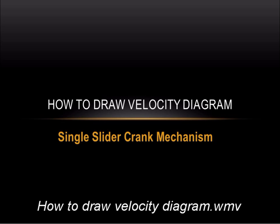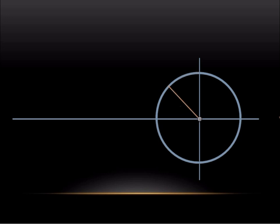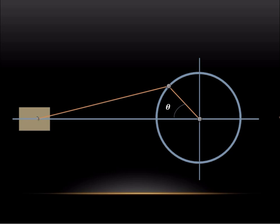We'll try to understand how to draw the velocity diagram for a single slider crank mechanism. First, we'll draw the mechanism to a certain scale by drawing the crank circle, with the crank making some angle theta with the inner dead center (IDC). Then we'll draw the connecting rod to a certain scale, and this is the piston. OA is the crank and AB is the connecting rod.